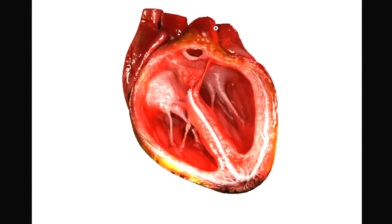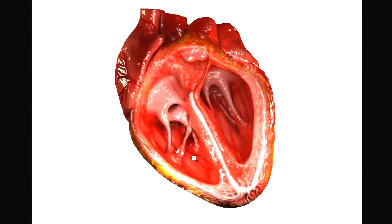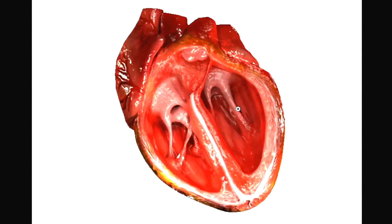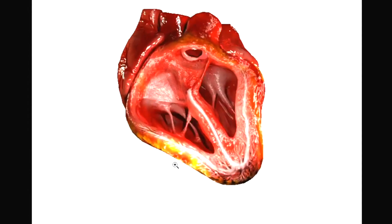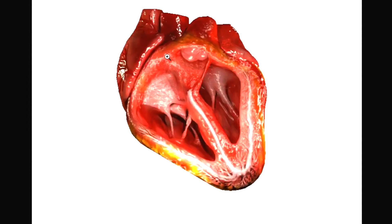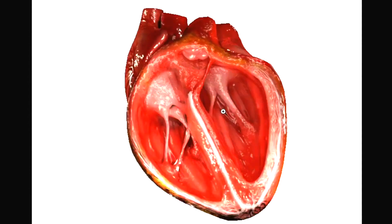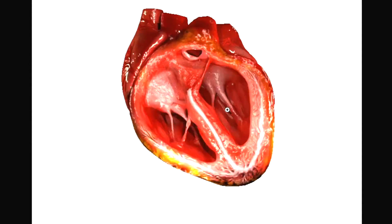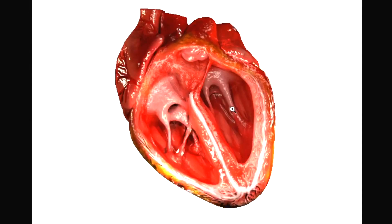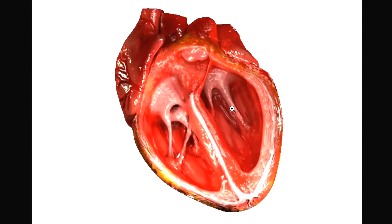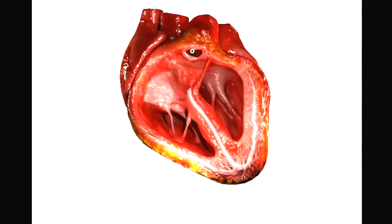The atria contract first, then the ventricles contract second, but they're contracting in concert. Then everything resets back to normal and the same contraction happens again. In the next series we're going to break things down to the smallest level and then build it back up to see how we return to this point.